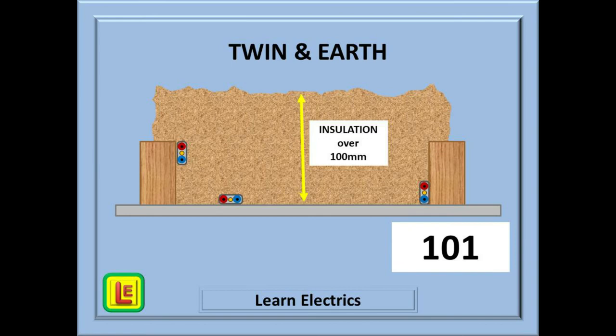If the insulation is over 100 millimeters in thickness, now we need a reference method with a number over 100. Well, 101 is over 100. And each cable is touching another surface, so our reference method for insulation over 100 millimeters is 101.